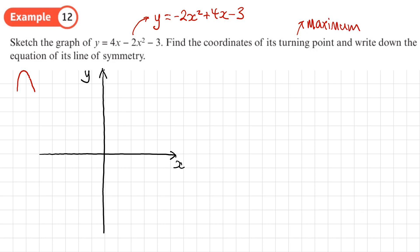To find the roots, I could factorise or complete the square, but the quadratic might not cross the x-axis at all. Rather than spend time trying to factorise with a coefficient of -2, I'll use the quadratic formula. Here a = -2, b = 4, and c = -3.